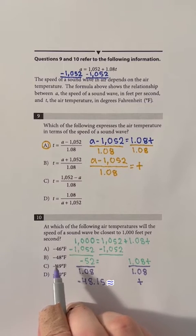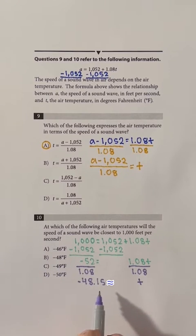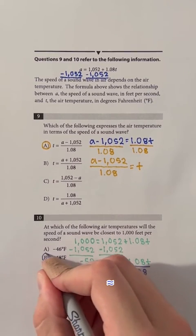B, negative 48 degrees Fahrenheit is the closest to negative 48.15. So, B is the correct answer.